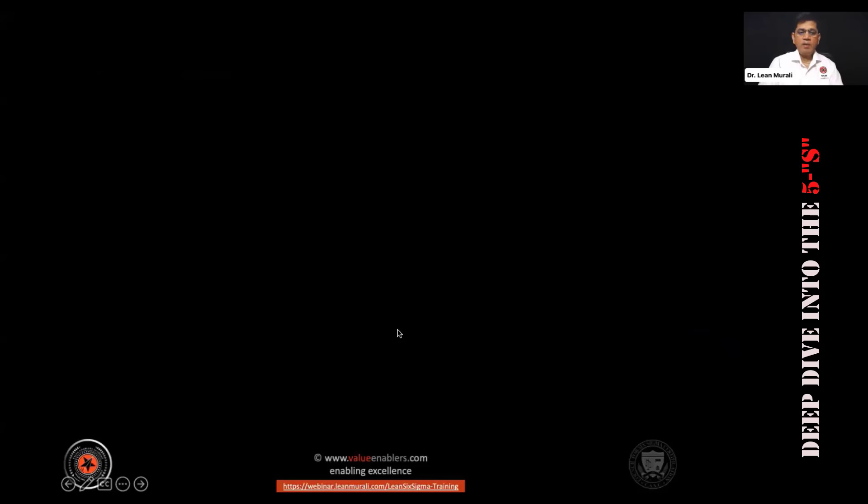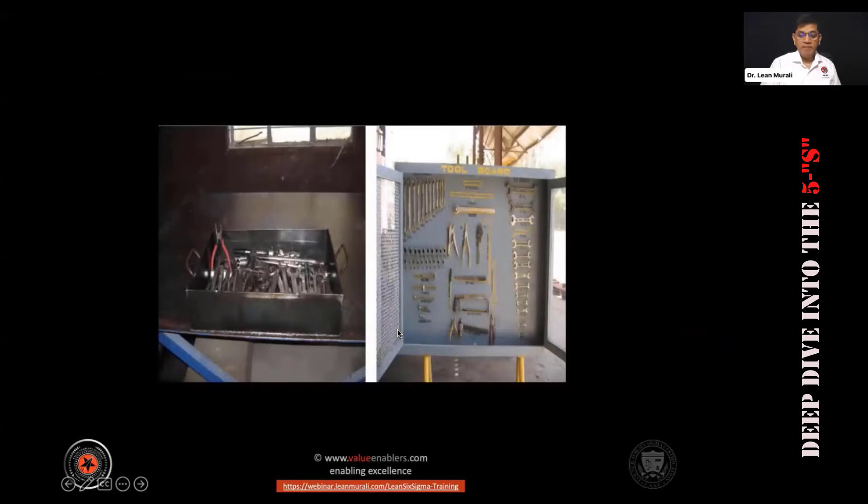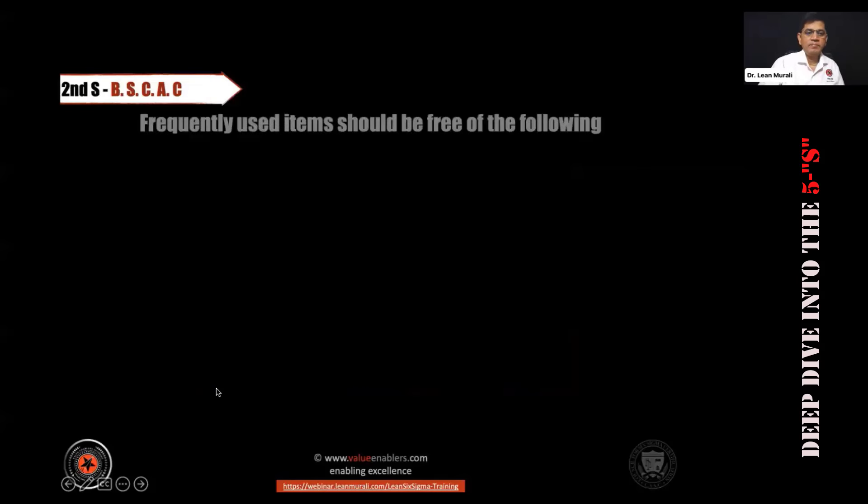Even the toolbox, this is called shadow board. All of you type SB in the chat box - shadow board. Shadow board means you keep it and you mark the outline shield of that, and when you take it you have the exact shadow of that. It's called as a shadow board. It's a way of organizing your tools, and not only tools, even in your office, in your cupboard, in your drawer, you can organize whatever that you have kept. So remember BSC AC. All of you type BSC AC in the chat box. BSC is bachelor of science, AC is air condition, just for you to remember.